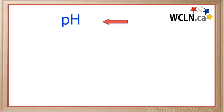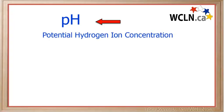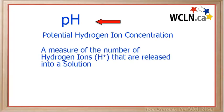pH refers to the potential hydrogen ion concentration in a solution. It is a measure of the number of hydrogen ions that are released into a solution. The more hydrogen ions there are in a solution, the more acidic a solution is.